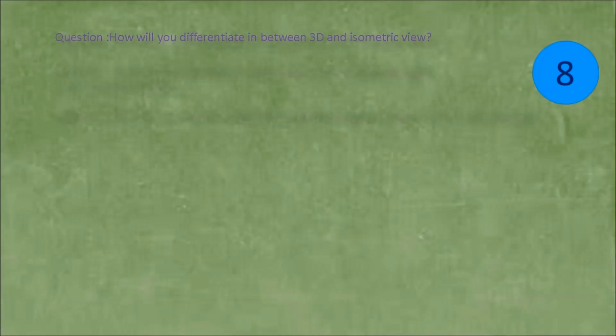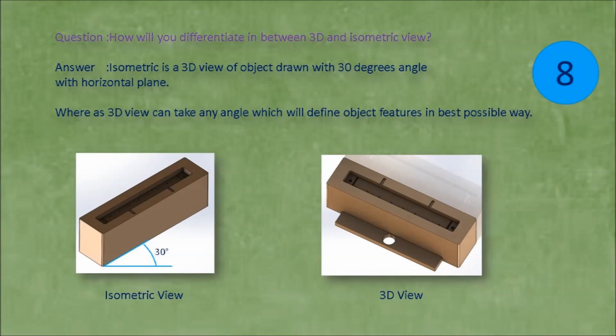Question: How will you differentiate between 3D and isometric view? Answer: Isometric is a 3D view of object drawn with 30 degrees angle with horizontal plane, whereas 3D view you can take any angle which will define object features in best possible way.